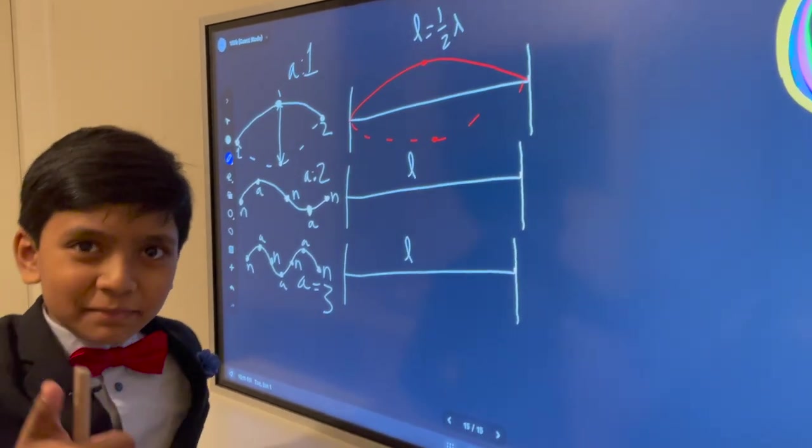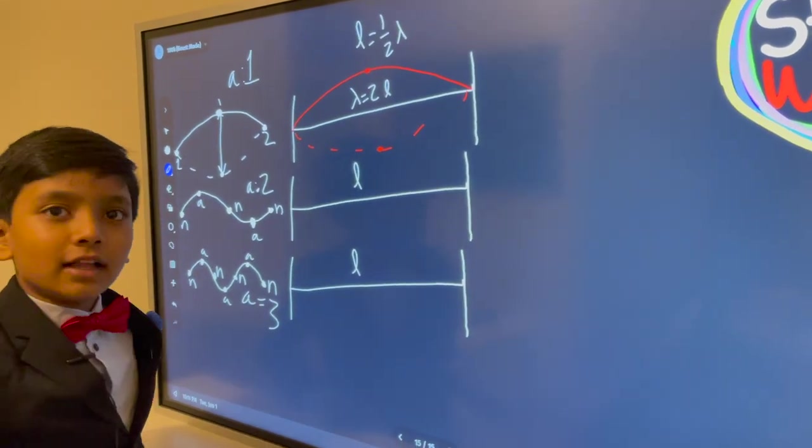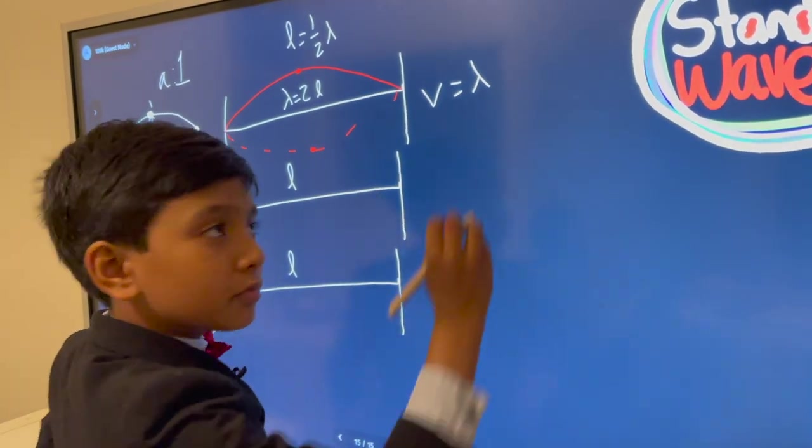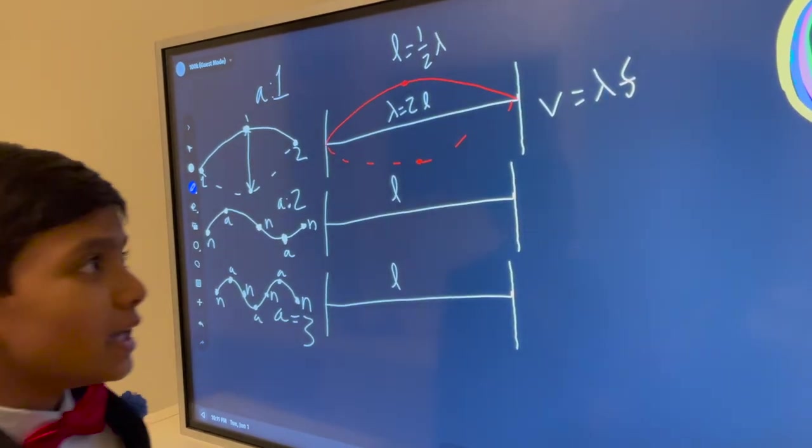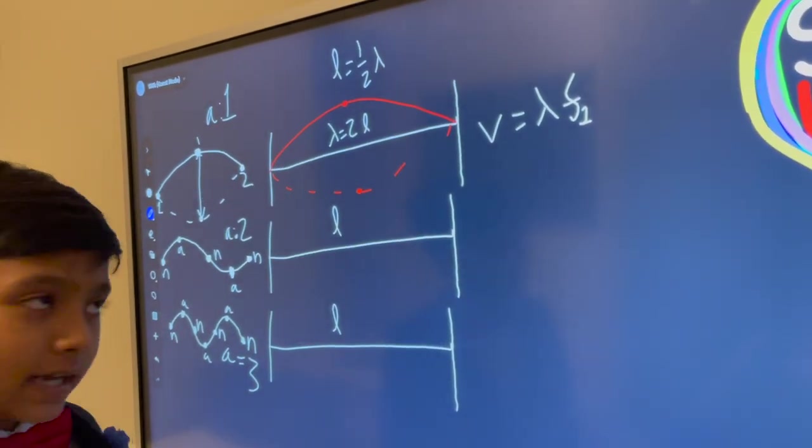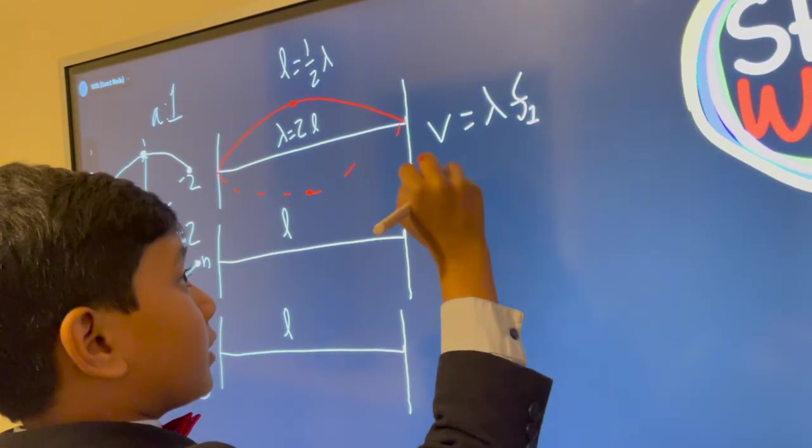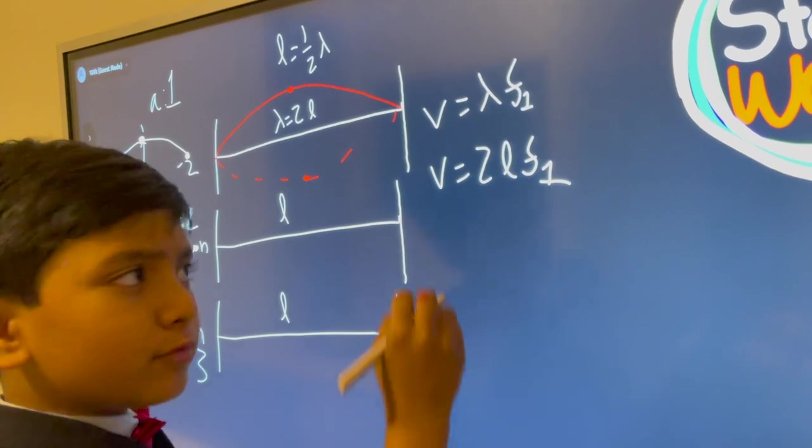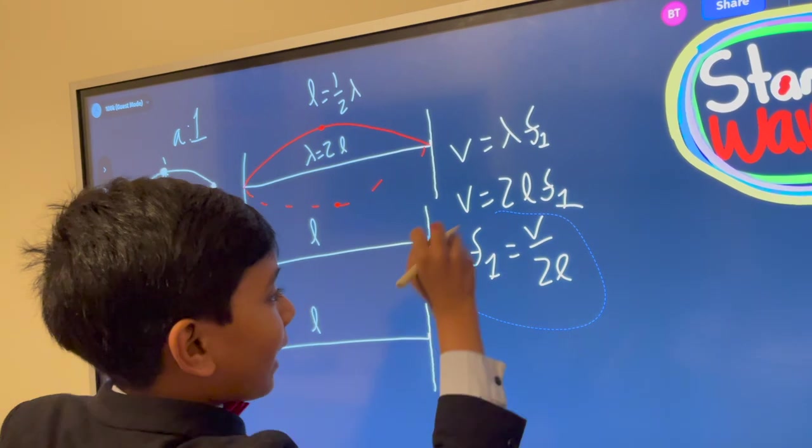And so if we do some pesky algebra, we get lambda equals 2L. Now, remember the important equation, velocity of the wave equals the wavelength of the wave times frequency of the wave. And we can do some interesting things with this, especially because f is very important. It's the fundamental frequency, which we mentioned in the intro, and we'll get to later. So let's just plug in lambda equals 2L for now and see what we can get. All right, 2L f1. And now, let's find f1. f1 equals v over 2L.